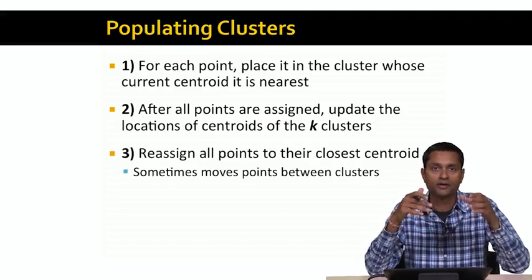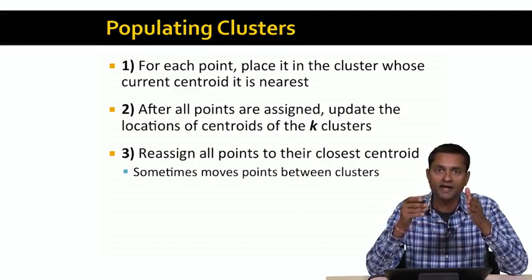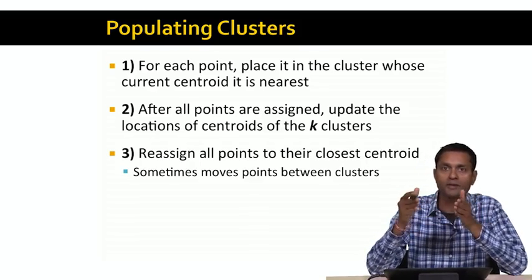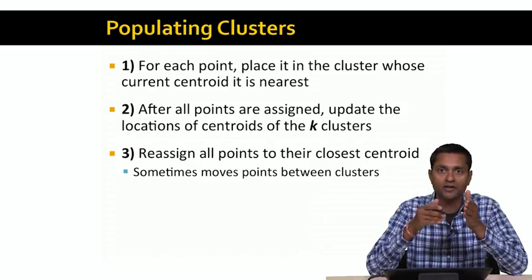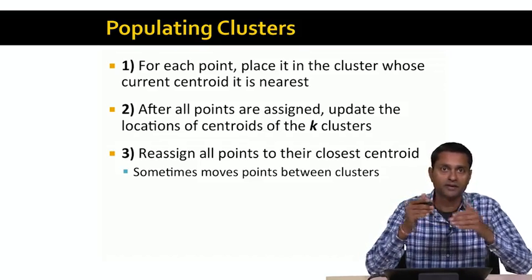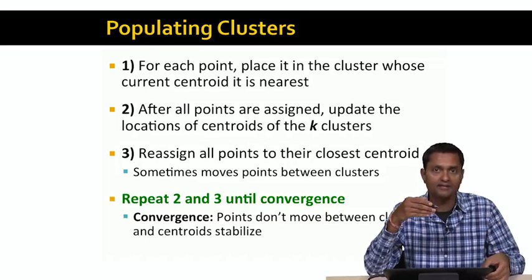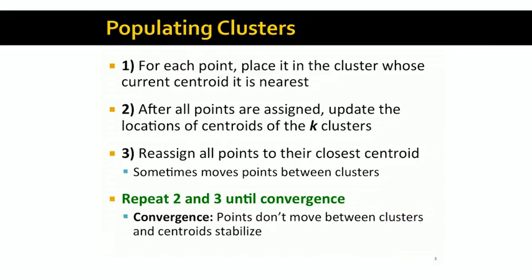So we're going to update the locations of the centroids of each of the k clusters by taking into account the new data points that have been added. Once we do this, the centroids of the k clusters will have moved, and a point that was close to one cluster might be closer to another. So we'll reassign all points to their closest centroid — sometimes this moves points between clusters. We repeat these steps until convergence, meaning the k centroids don't move any further and the points don't move across clusters. At that point, we have a stable k-means clustering.